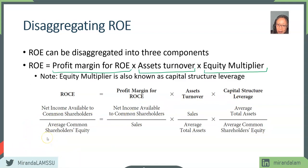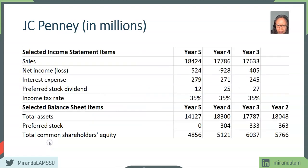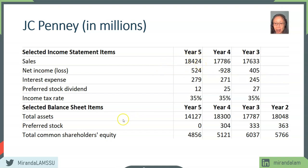Now let's take a look at an example. I encourage you to pause the video and download the template so you can follow along. We are using raw data extracted from financial statements. For income statement items, sales are for the full year. For balance sheet items, these are year-end balances, so if we need averages, we have to compute them.